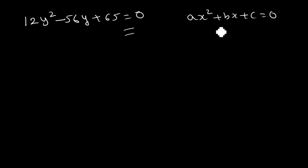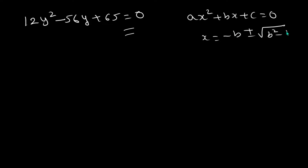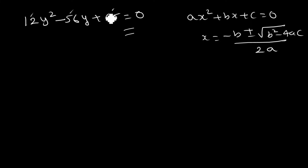This can be solved using the quadratic formula: y = (−b ± √(b² − 4ac)) / 2a. Here a = 12, b = −56, and c = 65. Substituting these values, you will get the two y values as 5/2 and 13/6.